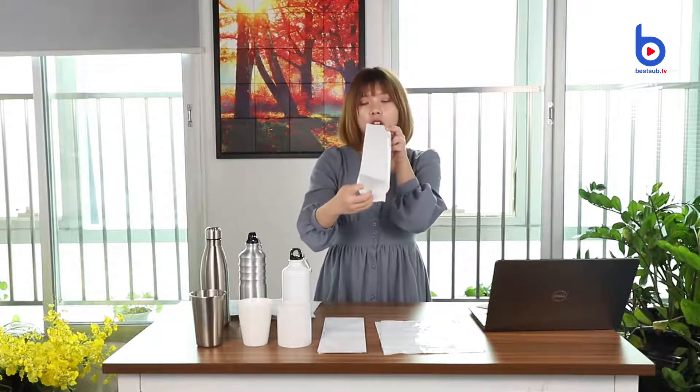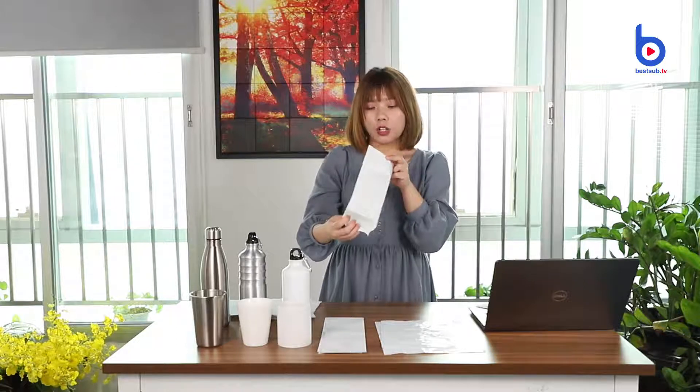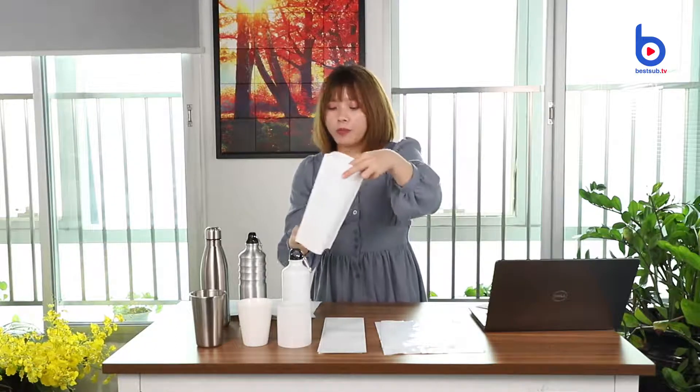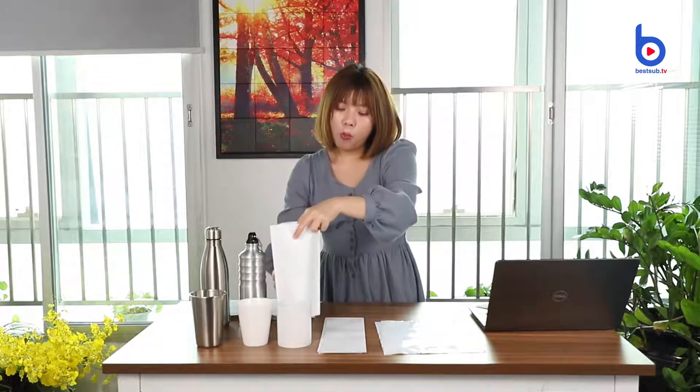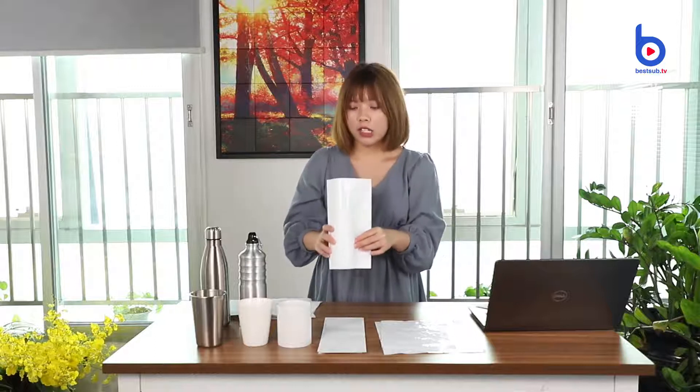It's called shrink film and you may also call it a shrink sleeve because it can be opened up like this, just like a little sleeve, and you can put it around your bottle like this. After applying it, you will shrink to wrap the bottle more tightly.